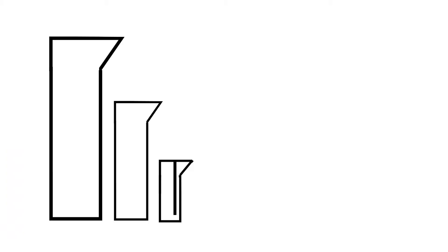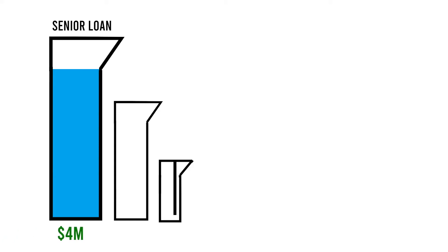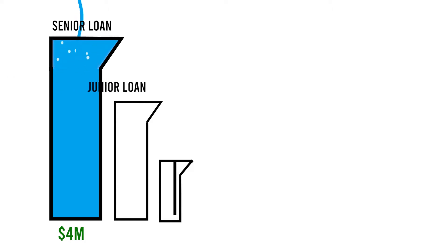Let's imagine the lenders are these graduated cylinders. You start the waterfall by pouring your sale proceeds into the senior loan cylinder, because senior debt is first in line to get paid out. Once that $4 million obligation is fulfilled, the water continues spilling over to the junior construction loan, which is the next $2 million. Remember, interest was paid during the project — otherwise, these obligations would be bigger.